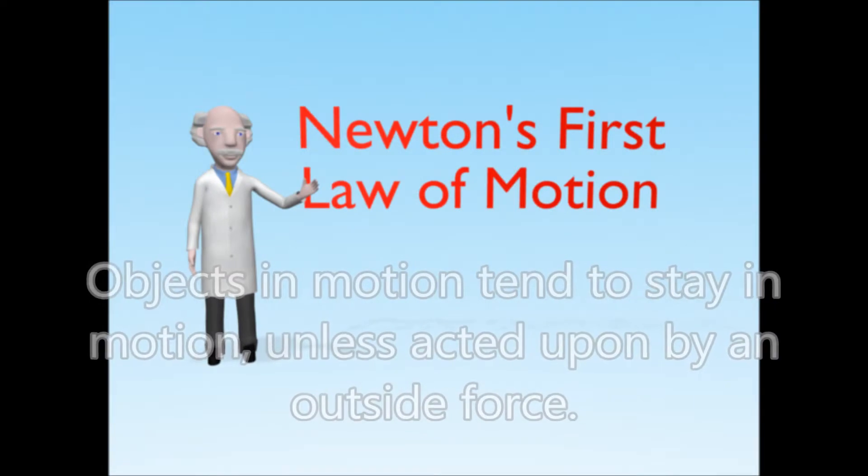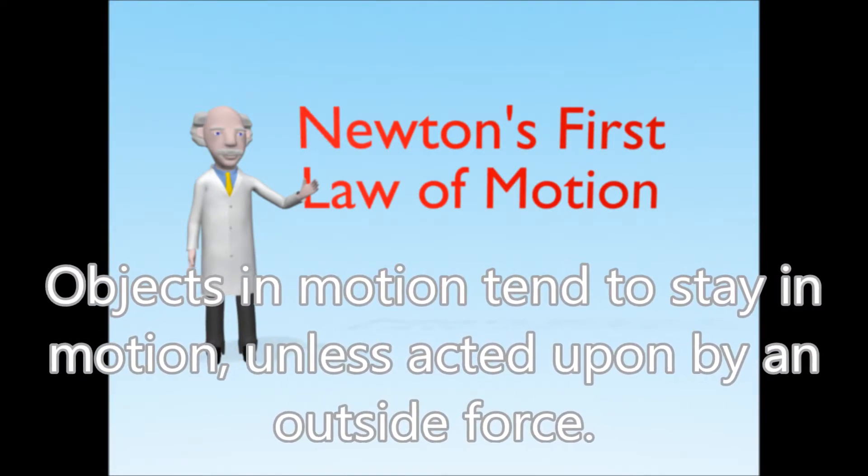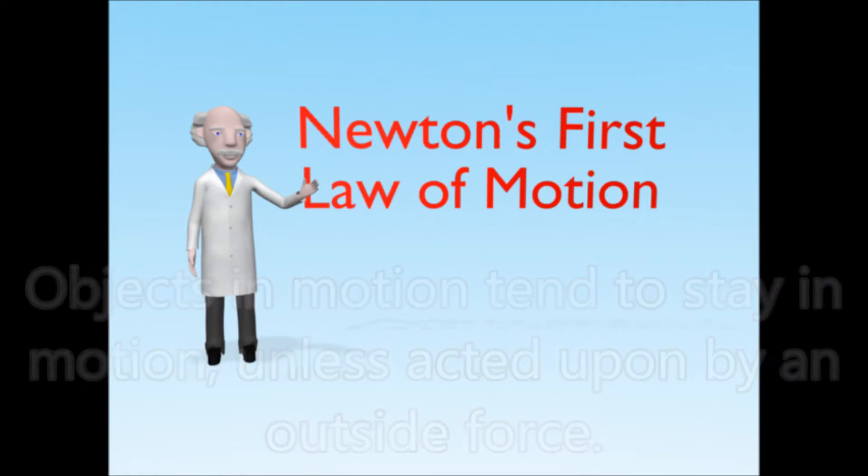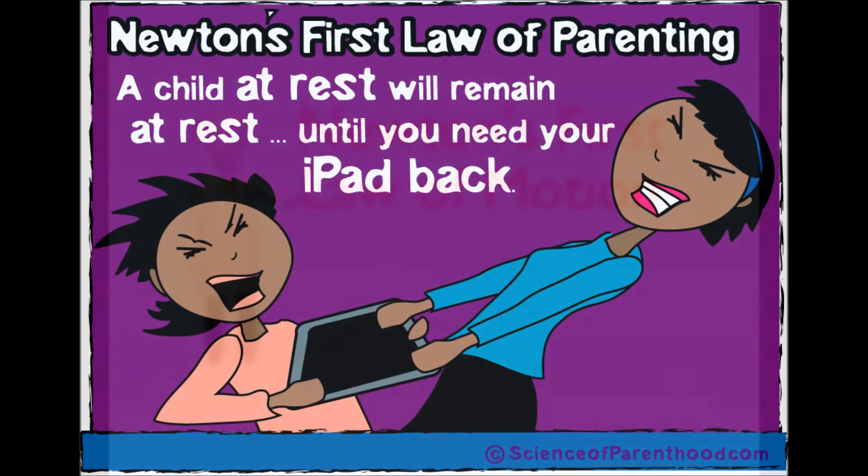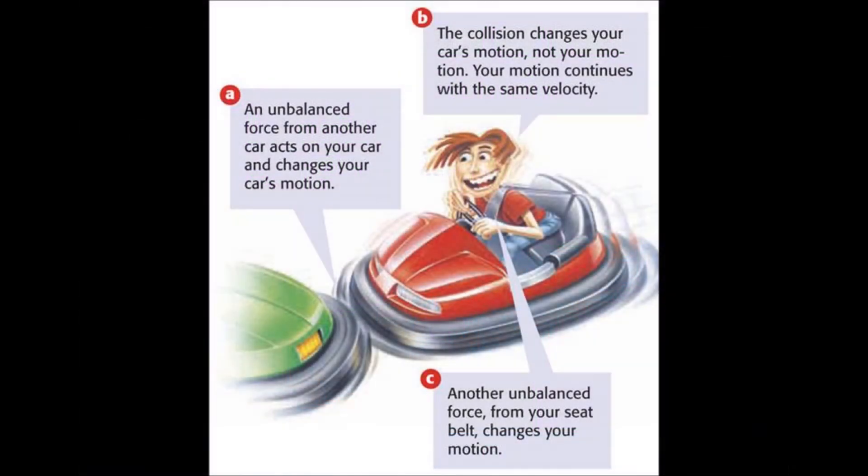Law number one: objects in motion tend to stay in motion unless acted upon by an outside force. This means that things that move will keep moving until something, anything, changes the motion in some way. Imagine driving in a windstorm or a blizzard. The effect of wind on your motion makes steering very difficult.